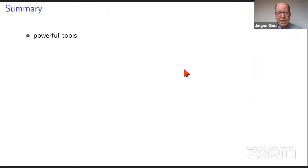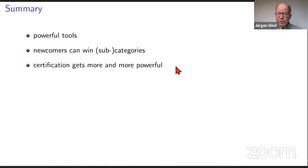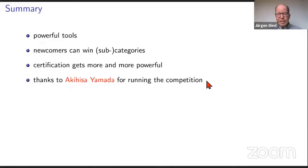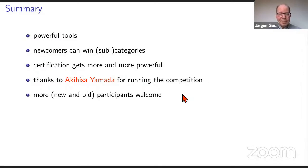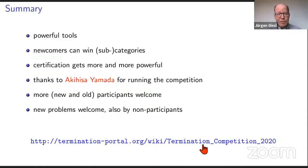In summary: there were many powerful tools and numbers higher than ever before for many categories. Newcomers can win categories — like LOAD, which was the most powerful tool for disproving termination of integer transition systems. Certification gets more powerful every year but there is still room for improvement. Big thanks to Akihiza for running the competition. Please participate if you work on termination or complexity analysis, and even if you don't, you are welcome to submit new problems and pose challenges to the tools. More information is available on the competition website.